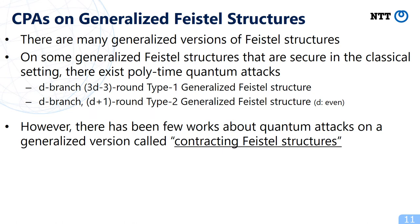There are many generalized versions of Feistel structures, and on some versions that are secure classically, there exist polynomial time quantum attacks, just as with three-round Feistel. For example, the D-branch 3D-3 round type 1 generalized Feistel structure is secure against polynomial time attacks classically, but a polynomial time quantum attack breaks this scheme. There also exist non-trivial polynomial time quantum attacks on type 2 generalized Feistel structures. However, there has been little work on quantum attacks on contracting Feistel structures.